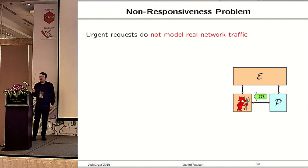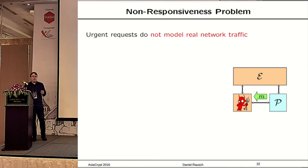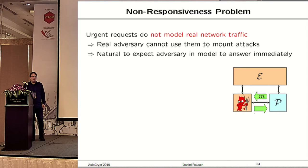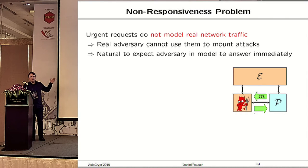Urgent requests have one important property: they do not model any real network traffic. If we looked at an actual implementation of protocol P, these messages would simply not exist. A real protocol does not ask 'am I corrupted on the network?' or ask the network to provide algorithms. Instead, the protocol run would continue without giving a real adversary any way to interfere. So it would be natural to require the same from our adversary in the security model — it should provide the expected answer and allow the protocol to continue, just telling whether it's corrupted, providing requested keys, or returning control after an event signal.